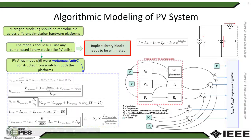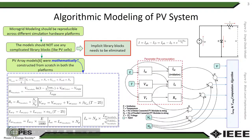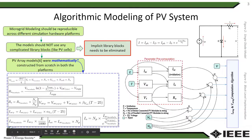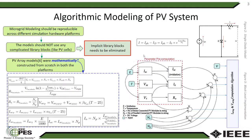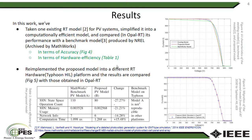All these parameters depend on inputs like irradiation, temperature, the number of series and parallel connected PV models, and the input DC voltage. This computational procedure is presented by the block diagram on the bottom right. Once all these parameters — like thermal voltage, terminal voltage, and terminal current — are computed, we feed them into the final equation and get the output voltage and output current. This is done using a Newton-Raphson model on the extreme right of the block diagram.